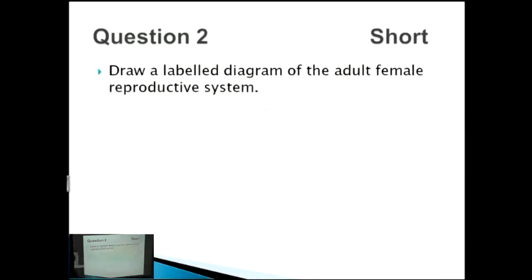Now the next question is a draw a diagram one, which I love. The trick I've found with the adult female reproductive system is you have to draw the frontal view. You don't want to draw the side-on view, which is so difficult. The first thing you can draw is the uterus.